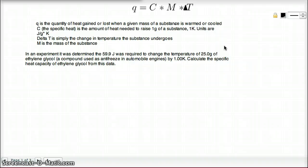And it doesn't matter which temperature unit you use. Delta T is the change in temperature the substance undergoes, and M is the mass of the substance we're examining.